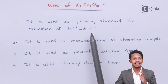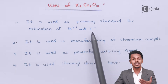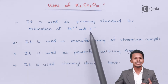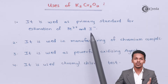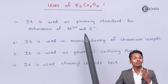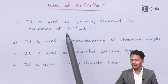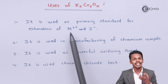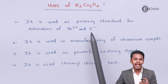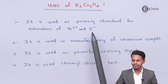Based on the reaction of acidified K₂Cr₂O₇ on potassium iodide, there is a color change. Using this color change, we can perform volumetric analysis and estimate the amount of Fe²⁺ ions present in the solution.